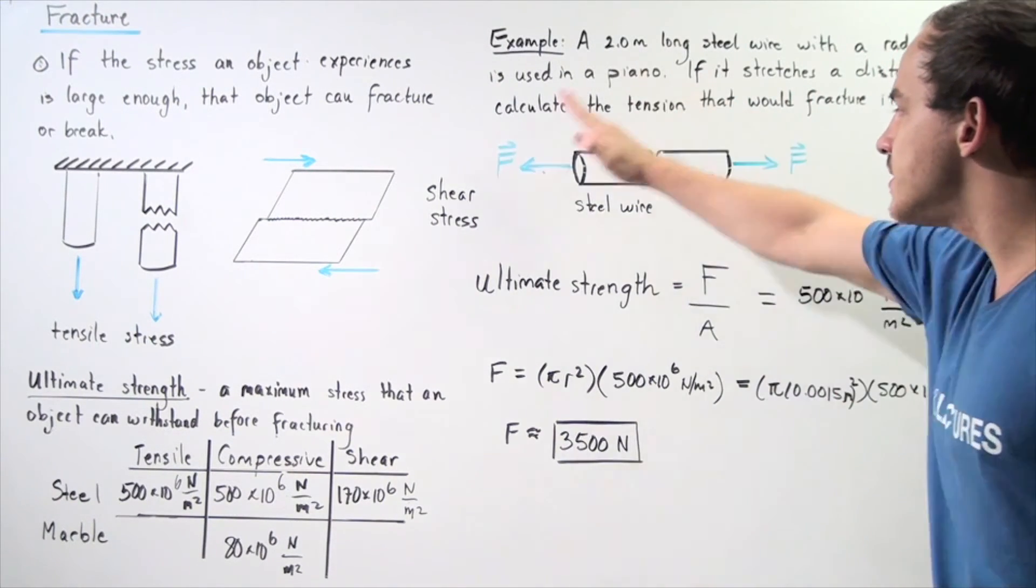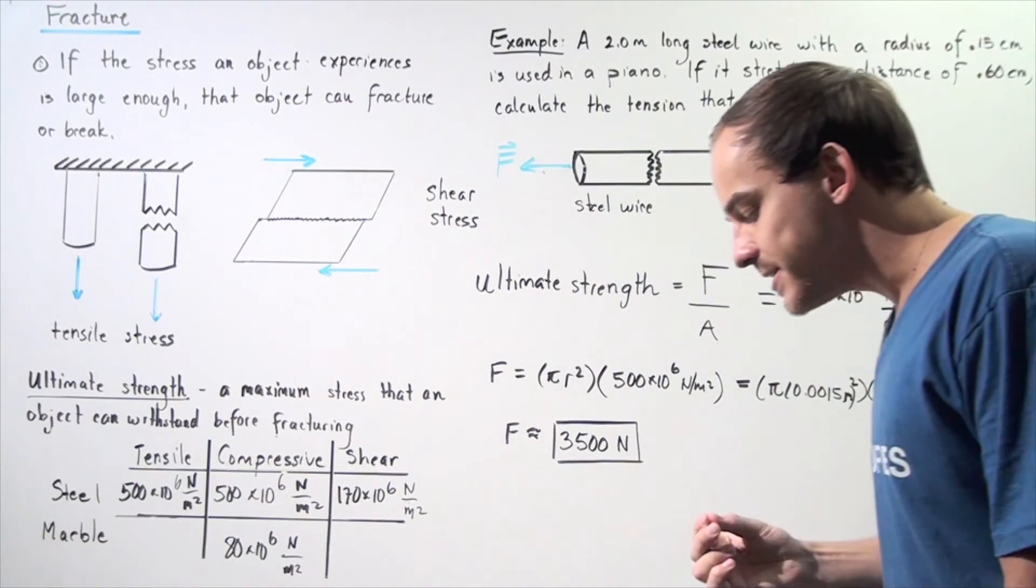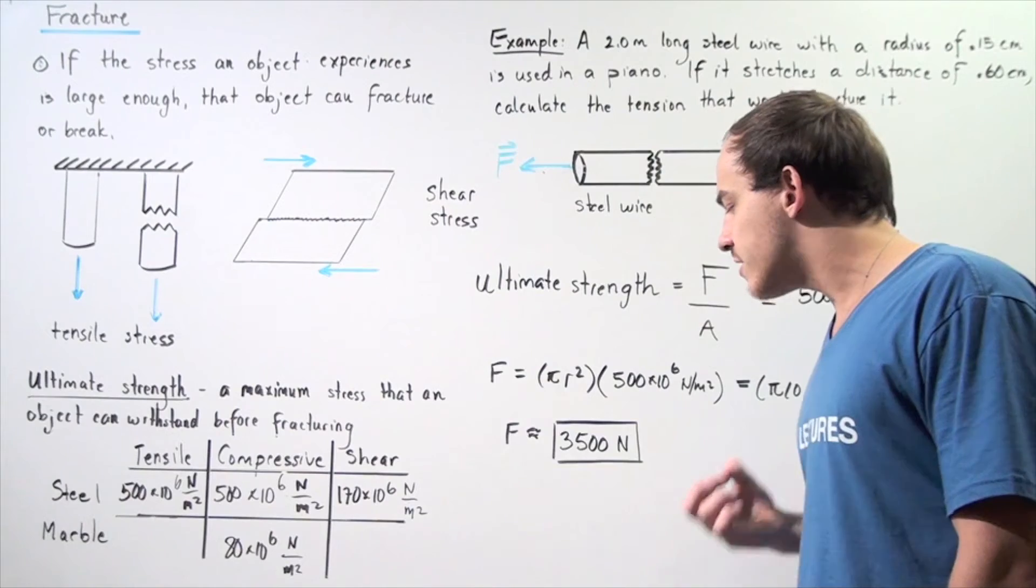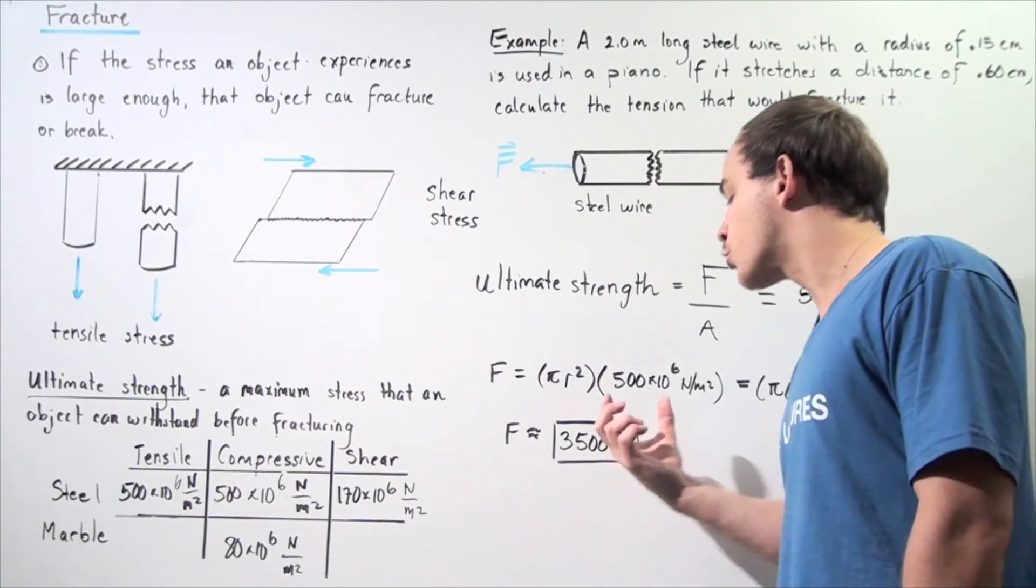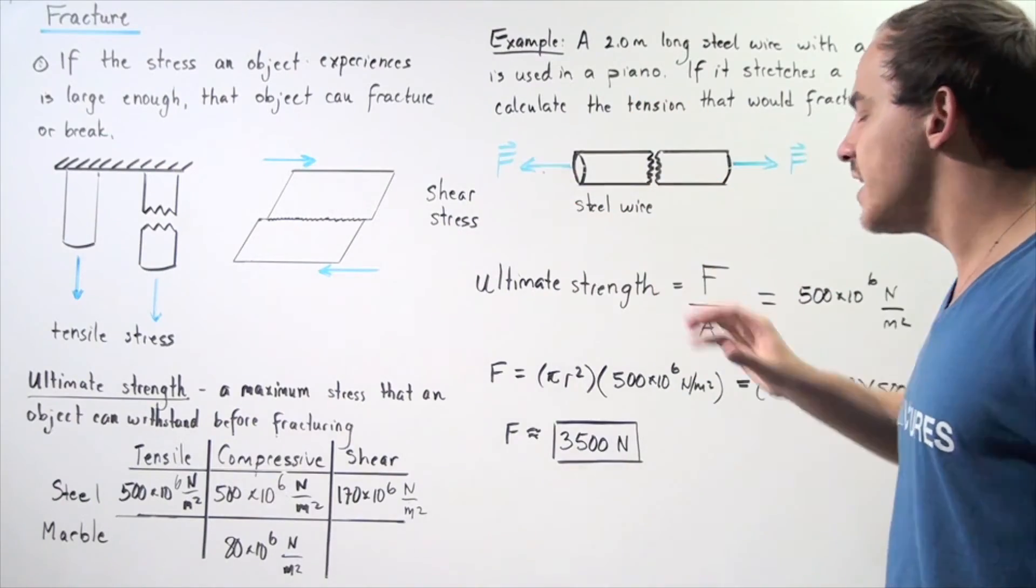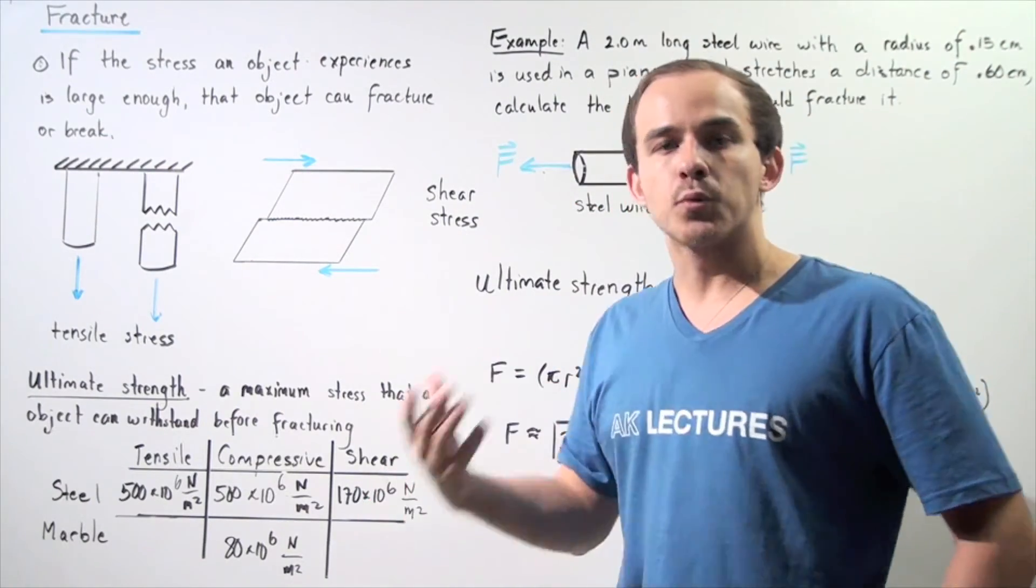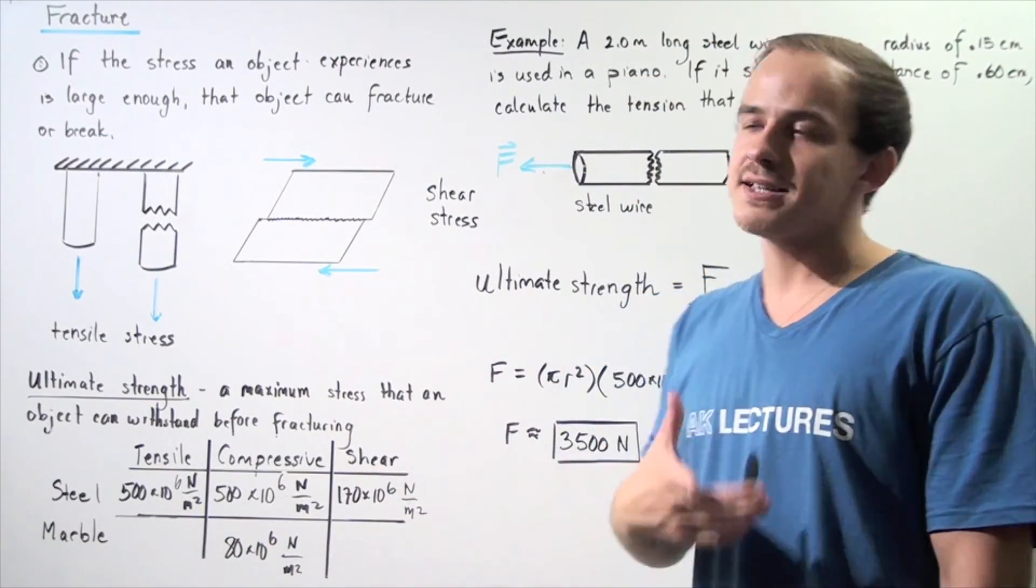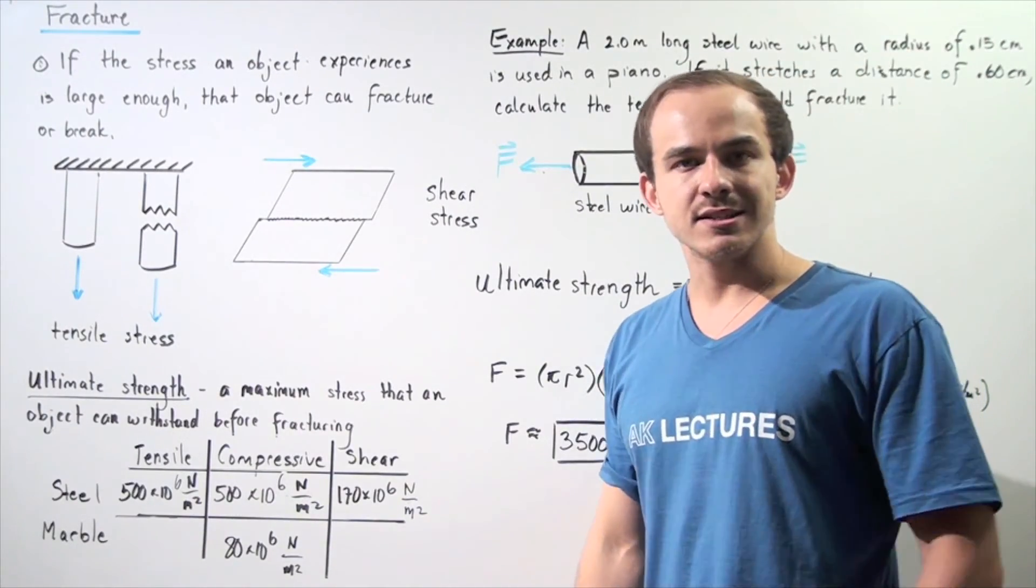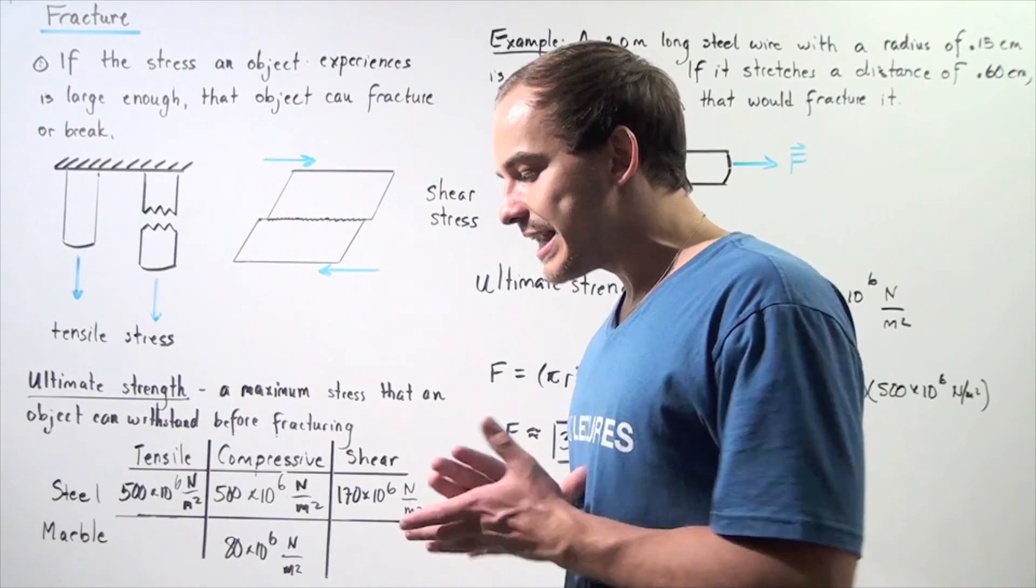In other words, if this steel wire experiences a tensile force that is equal to or greater than this quantity, or actually greater than this quantity, then that object, our wire, will fracture, it will break into two or more pieces. Let's assume in this case it breaks into two pieces.